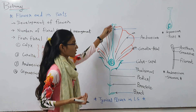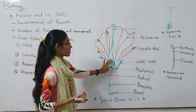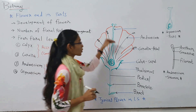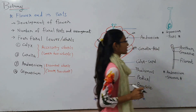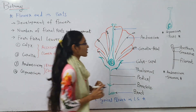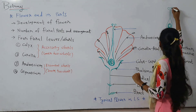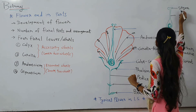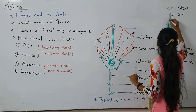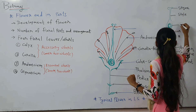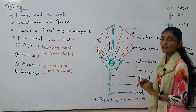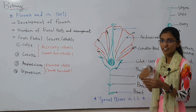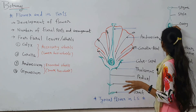The gynoecium is the innermost wall of the flower. The gynoecium is also a whorl, and its single member is called a pistil. The pistil is made of three parts: the top portion is called the stigma, the elongated tube structure is called the style, and the basal swollen structure is called the ovary. The ovary has chambers, and the number of chambers varies — there may be one, two, or more — with ovules present inside.